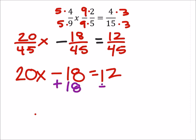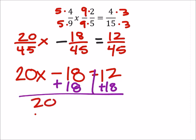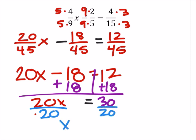And from here I'm going to add 18 to both sides, so that I have my x's on their own side of the equal sign. And 12 plus 18 is 30. So to solve this one, I'll divide both sides by 20. And if I simplify that by dividing both these by 10, then I get 3 halves.